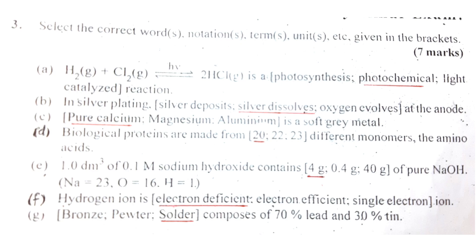Number E: 1.0 dm³ of 0.1 molar sodium hydroxide contains 0.4 grams of pure NaOH. The correct answer is 0.4 grams, since 1.0 dm³ of 0.1 molar NaOH contains 0.4 grams of pure NaOH.